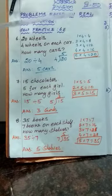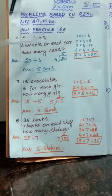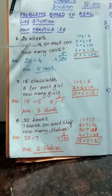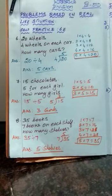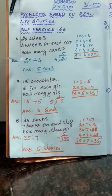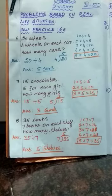See that one — self practice 6A, sixth sum. 20 wheels, 4 wheels on each car. How many cars? So what do you understand from the question? Totally how many wheels are there? 20 wheels. It is given as 20 wheels, 4 wheels on each car. So 1 car contains 4 wheels. You have to find how many cars the 20 wheels are fixed.